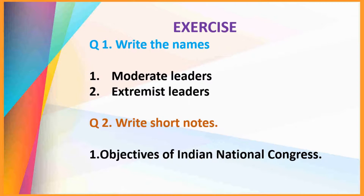The next question is: write short notes on the objectives of Indian National Congress. The answer includes the following points. The Indian National Congress was established in 1885 with the following objectives: first, to bring the people of India onto a common platform; second, to create a feeling of unity among them; third, to provide opportunities to understand one another's problems and views; fourth, to increase the feeling of unity among the people; and fifth, to take measures for the upliftment of the country.